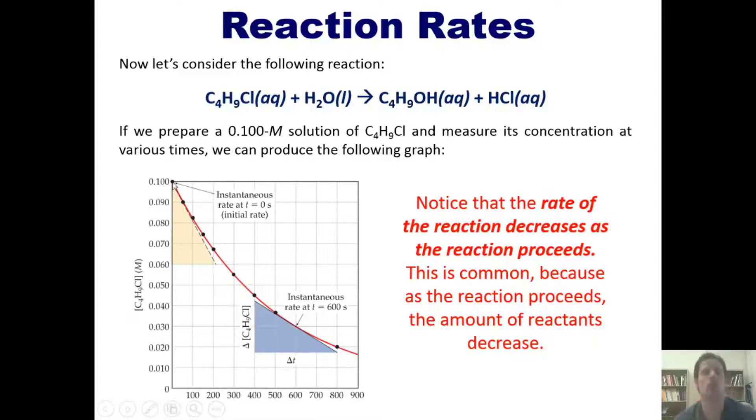Time is on the x-axis in seconds, and the concentration of butyl chloride is on the y-axis in molars. You can notice once again that the rate, or the slope of this line, is decreasing over time as the reaction proceeds.